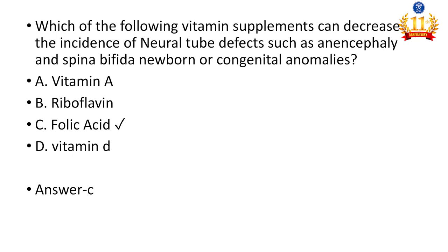Next question: which vitamin supplement can decrease the incidence of neural tube defects such as anencephaly and spina bifida in newborns? Options are vitamin A, riboflavin, folic acid, and vitamin D. Other congenital anomalies can also be prevented with maternal supplementation of folic acid.